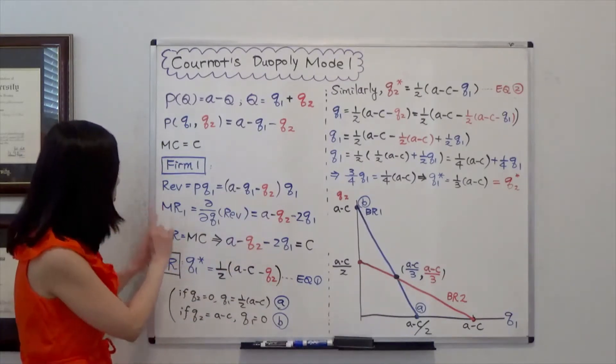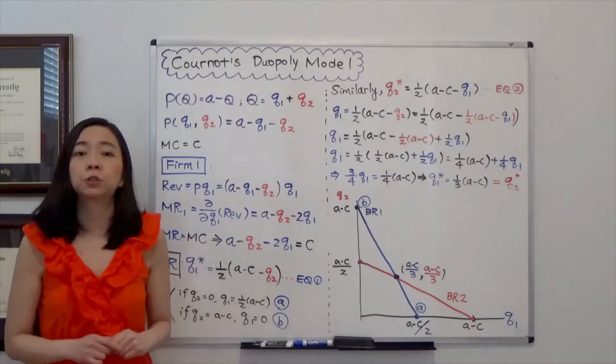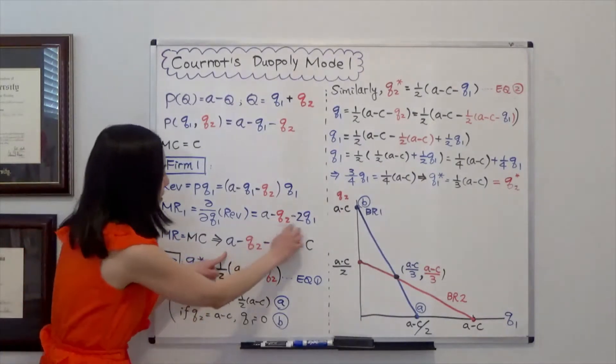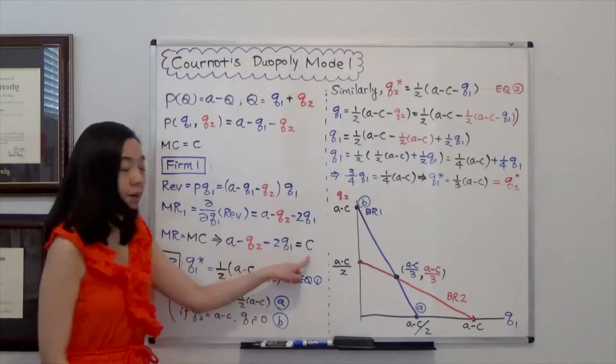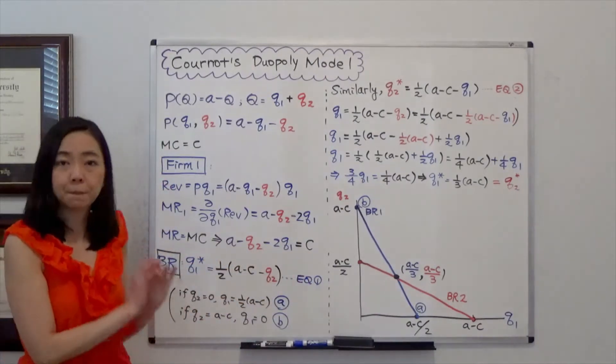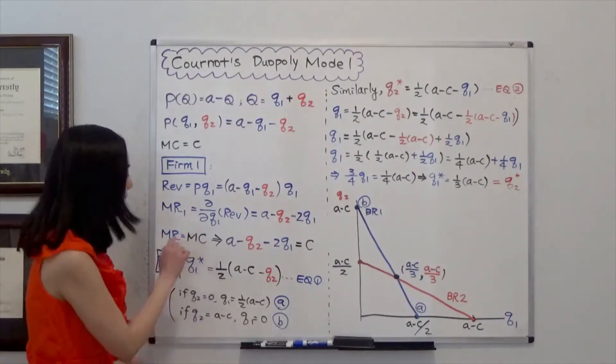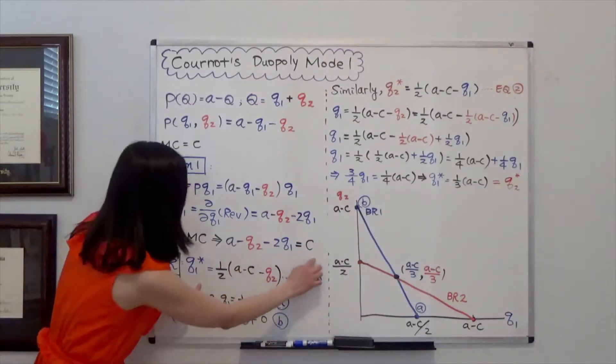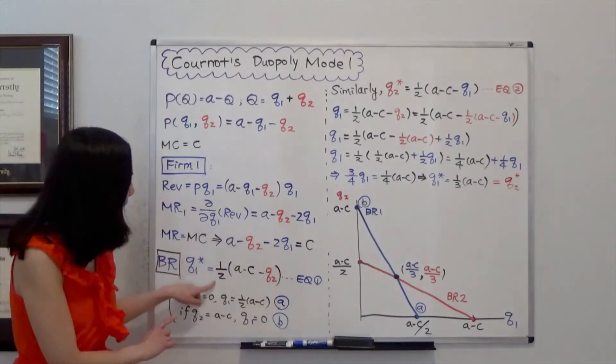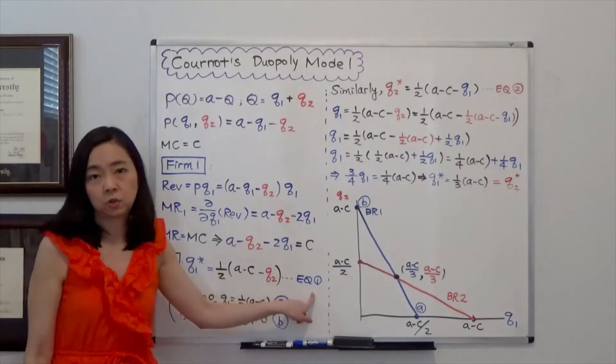And we're going to equate that marginal revenue to marginal cost in order to maximize our profit. So marginal revenue is here and that's the marginal cost. And after that you'll be able to find the best response function for firm 1. So Q1 star is equal to a half times A minus C minus Q2. And we can call that equation 1.